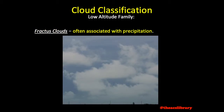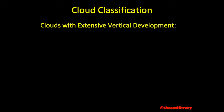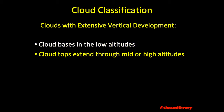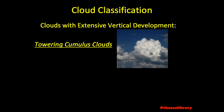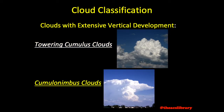A fourth family is made up of clouds with extensive vertical development. Oftentimes the bases of these clouds are found in the low-level altitudes, with the tops extending into either the mid- or high-level altitudes. These clouds usually contain supercooled water at altitudes above the freezing level. Included are towering cumulus clouds and cumulonimbus clouds for those associated with precipitation.